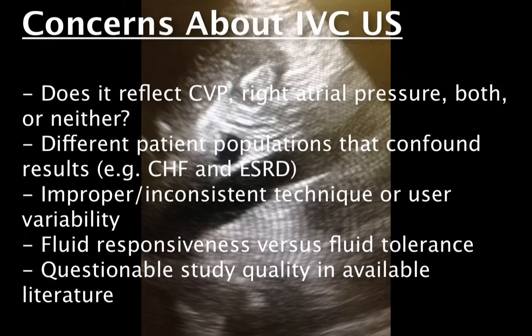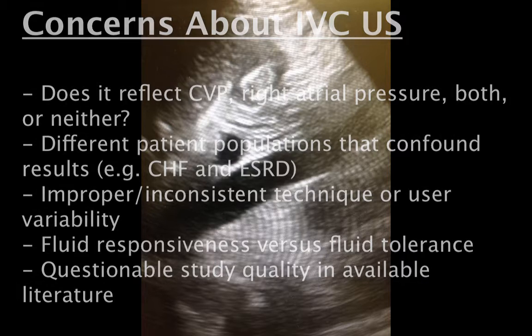Studies come down on both sides of the issue, with some articles stating that fluid status can be directly correlated to the presence of IVC collapse in different populations of critically ill patients, while others state that it is primarily a reflection of central venous pressure, or CVP, which has been shown to be unreliable as a measure of volume status particularly in septic patients. A recent meta-analysis raised concerns that studies used to support cava ultrasound are not adequately blinded and therefore not useful.